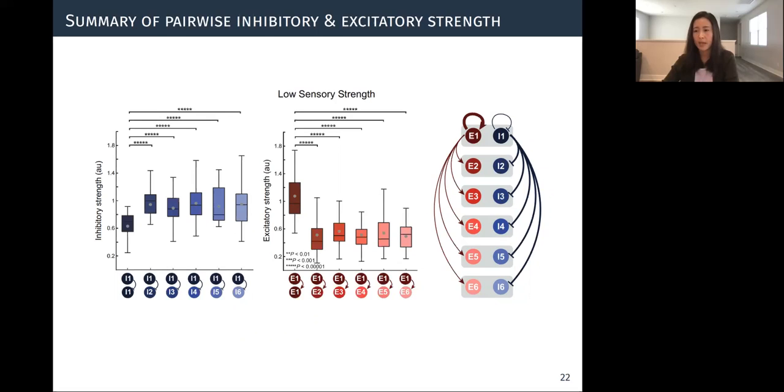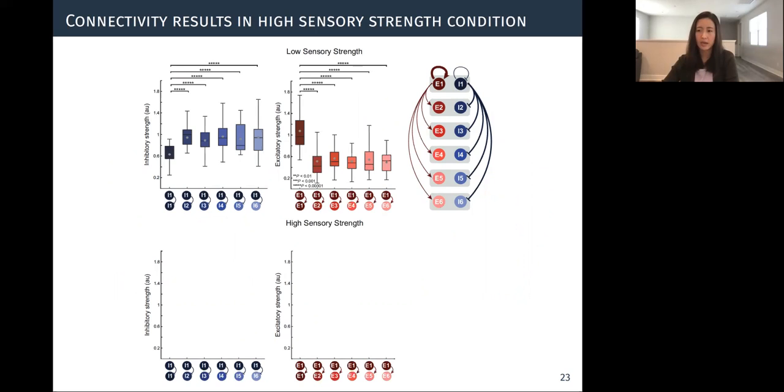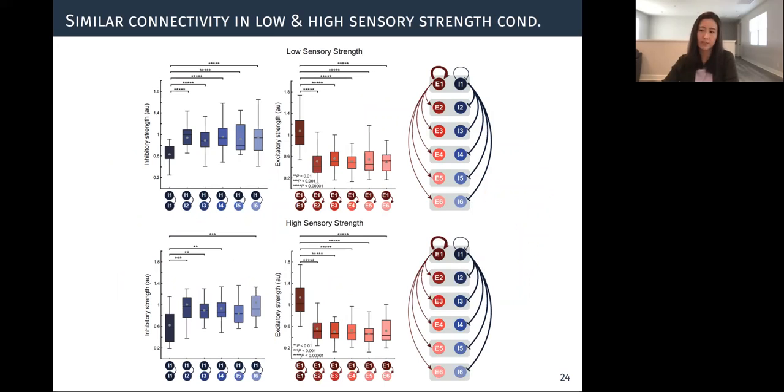And next we can look at the high sensory strength condition. We found that our models exhibited similar network connectivity patterns as observed in the low sensory strength condition. Therefore training our recurrent network model using a biased set of stimuli led to emergence of a subgroup of neurons that were more likely to stimulate themselves and inhibit other neurons resulting in enhanced neural responses at baseline.